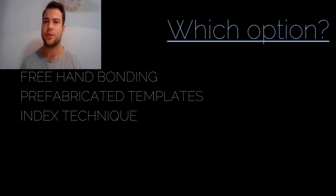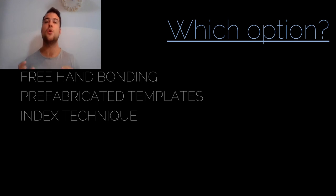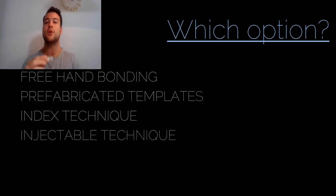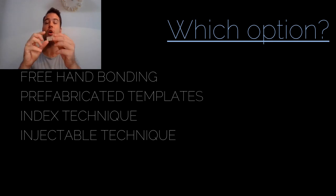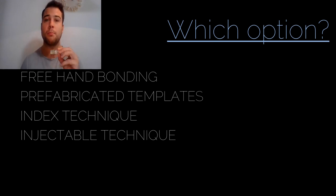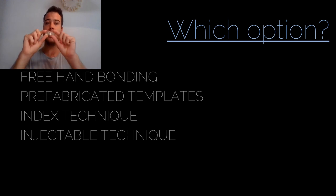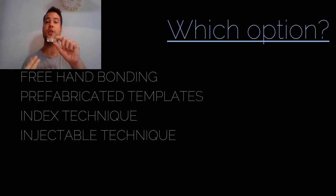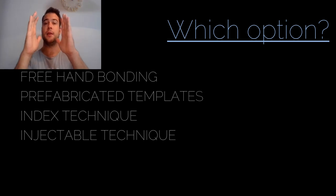With injectable technique, we also have a fully individualized plan using a wax-up and transparent silicone index, but the index sits perfectly stable in the patient's mouth. We inject by applying external pressure on the flowable composite itself — not on the mold. The mold serves its purpose stably while flowable composite fills the space between the tooth and the index.